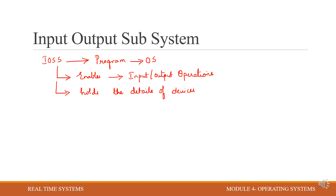IOSS also deals with all the problems of several tasks attempting to access the same device. For example, if T1 and T2 want to access the same device D1, this problem is addressed by IOSS.